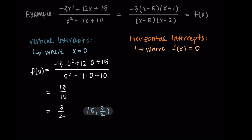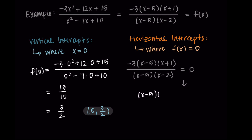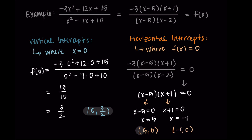For the horizontal intercepts, we set the whole function equal to 0, which means setting the numerator equal to 0. We don't need to worry about the negative 3 since it's never 0, so we look at x minus 5 and x plus 1. Setting x minus 5 equals 0 and x plus 1 equals 0 gives x equals 5 and x equals negative 1. So the horizontal intercepts occur at 5, 0 and negative 1, 0.